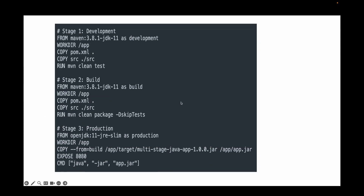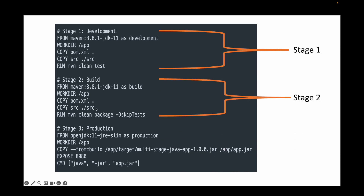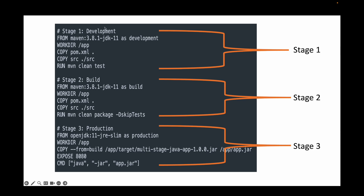For this example, here is the Dockerfile we will be using. We have three stages. Stage one is our development stage, where we install dependencies and run our test cases. Stage two is where we build our production-ready jar file — we run 'mvn clean package' and skip the tests since we already ran them in stage one. Stage three is where we create a very minimal production image, where test results and intermediate artifacts are not maintained.